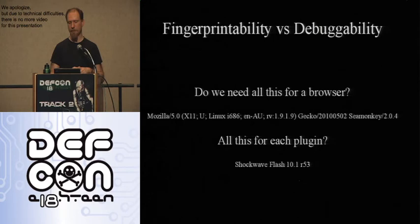Another lesson is that fingerprint-ability trades off against debug-ability. If you look at a user agent string, it contains your operating system, hardware platform, language, and the precise date your Gecko engine was built on — all this stuff.